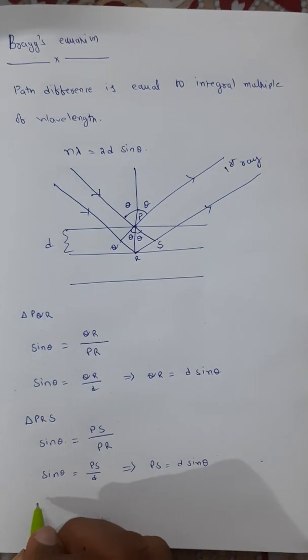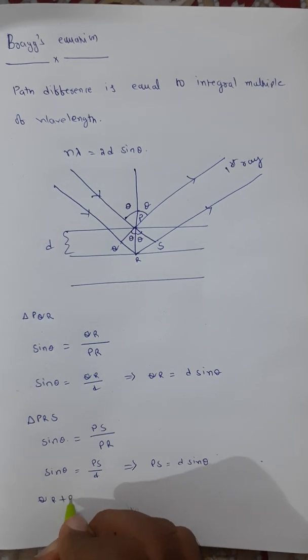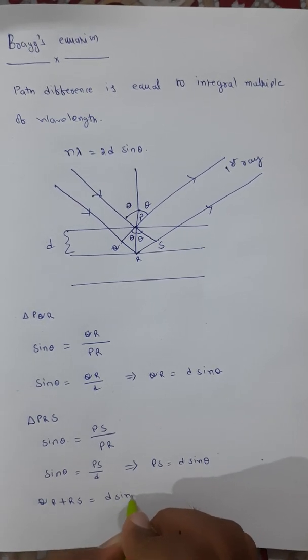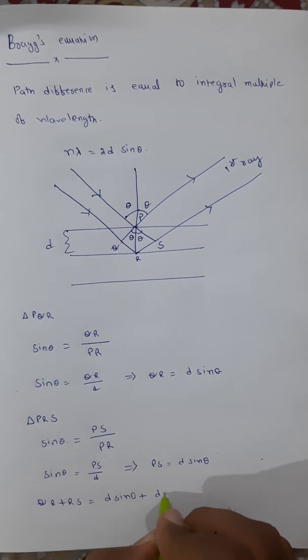Therefore, QR plus RS equal to d sin theta plus d sin theta.